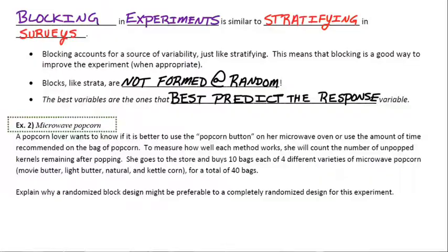Okay, so it says to measure how well each method works, she will count the number of unpopped kernels remaining after popping. She goes to the store and buys 10 bags each of four different varieties of popcorn, movie butter, light butter, natural, and kettle corn for a total of 40 bags.